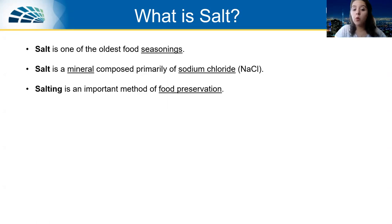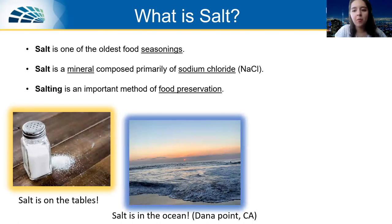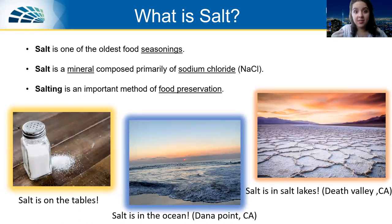We also know that salting is an important method people used in the past to preserve food. Where do we see different types of salt nowadays? We know there is salt on the table, but also in the ocean — for example, in this picture from Dana Point, California, the sea water tastes salty. Another very interesting place is salt lakes and salt flats, which are used a lot for producing salt. For example, you can see Death Valley Salt Lake in California in the image on the right.